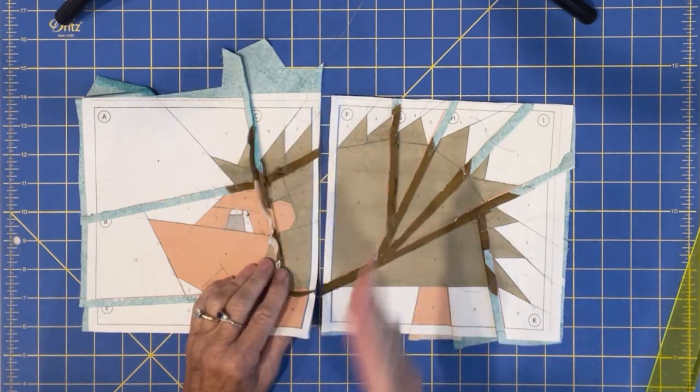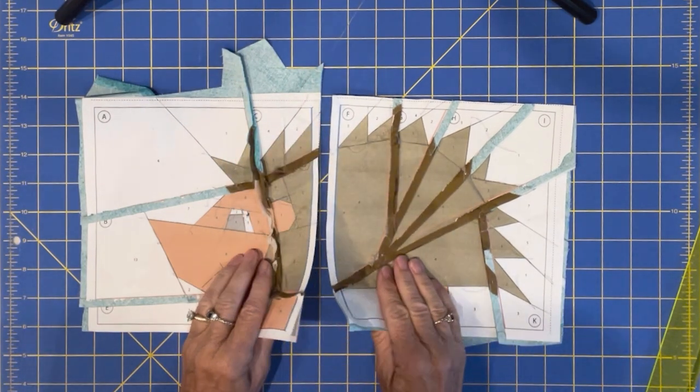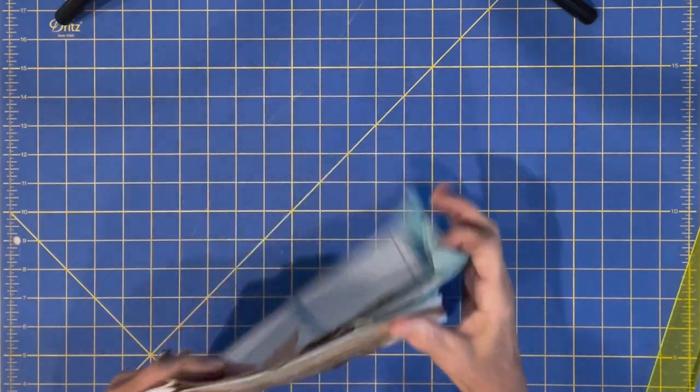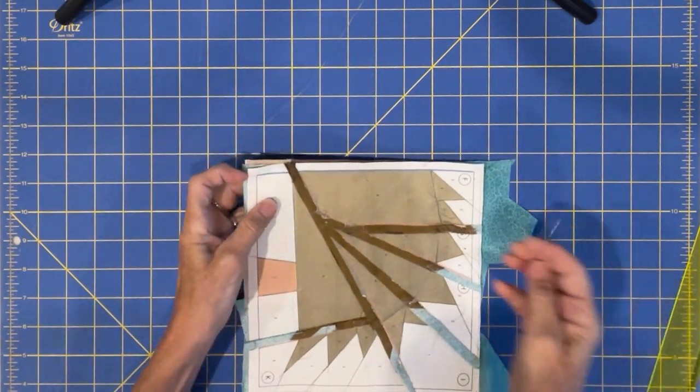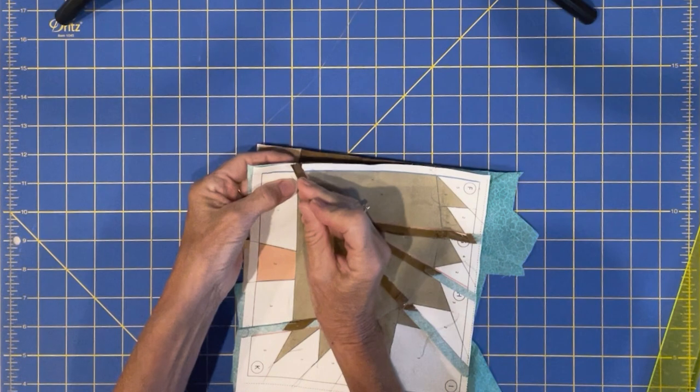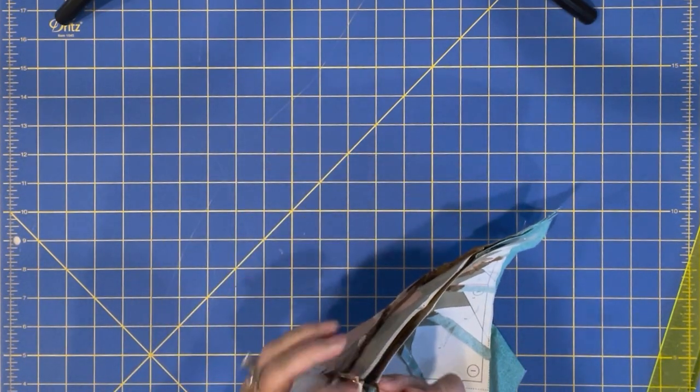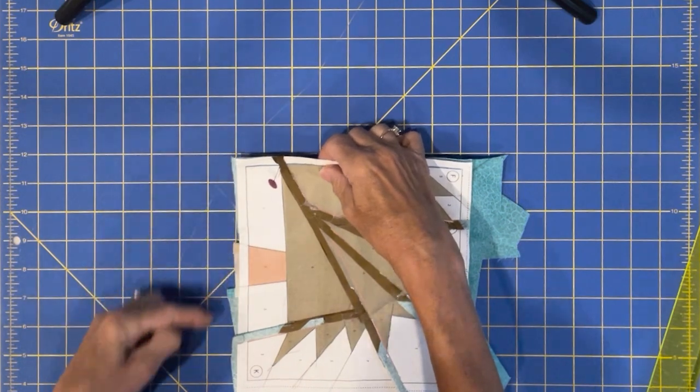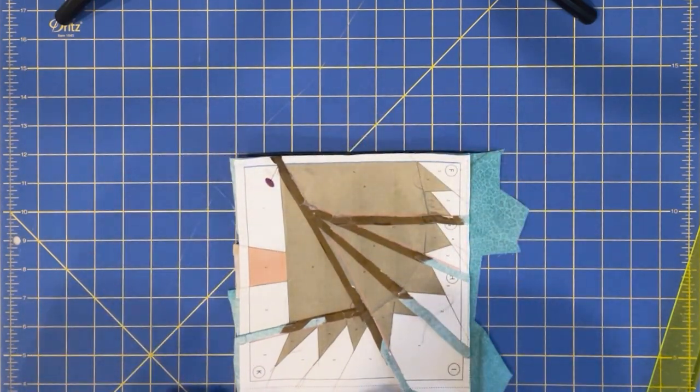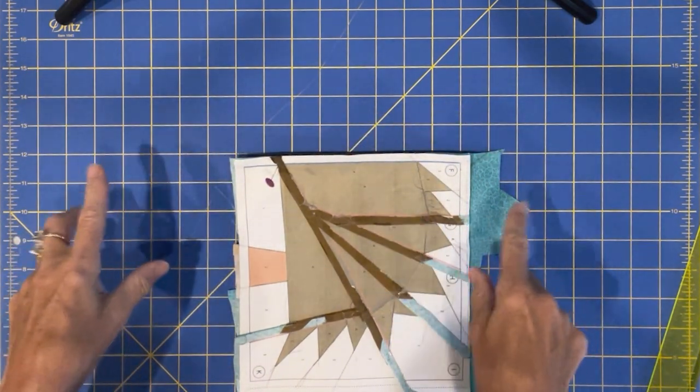And so find those spots that really need to be lined up and then pin them together by just poking the pin through where it's crucial that they line up.